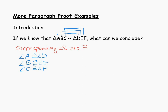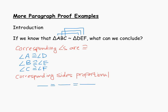Similar triangles also have the property that their corresponding sides are proportional. Their corresponding sides are not congruent — they're not exactly the same size — but their corresponding sides are in proportion. We're going to write a proportion that relates all three pairs of corresponding sides. The ratio of AB to DE would be proportional to the ratio of BC to EF, and that would also be proportional to AC to DF.